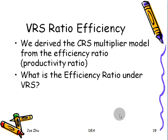If you recall in chapter three, we derived the CRS model multiplier model from the perspective of efficiency ratio: the aggregate output divided by the aggregate input. Now we have this VRS multiplier model. What is the efficiency ratio under VRS?